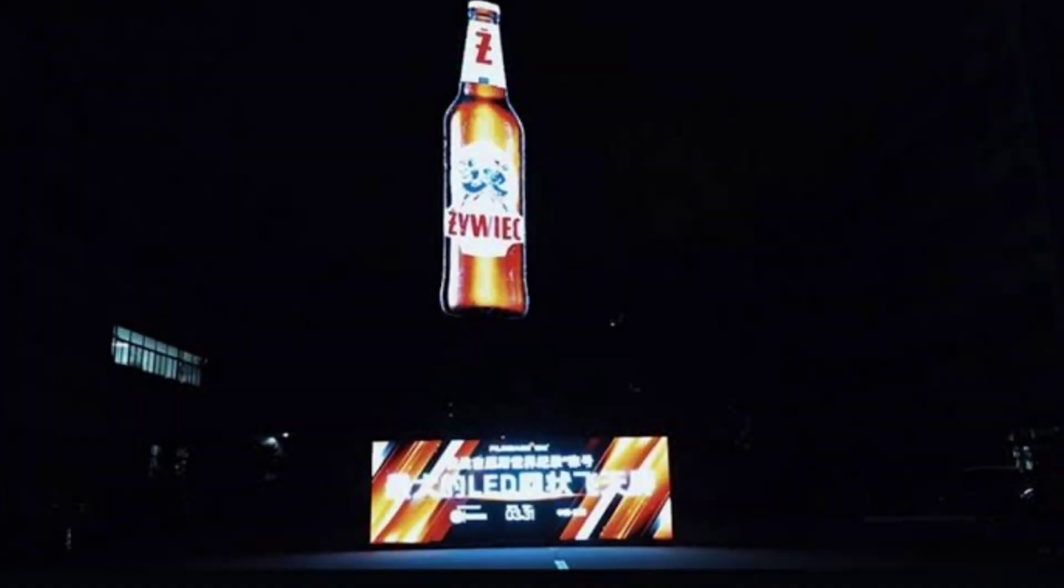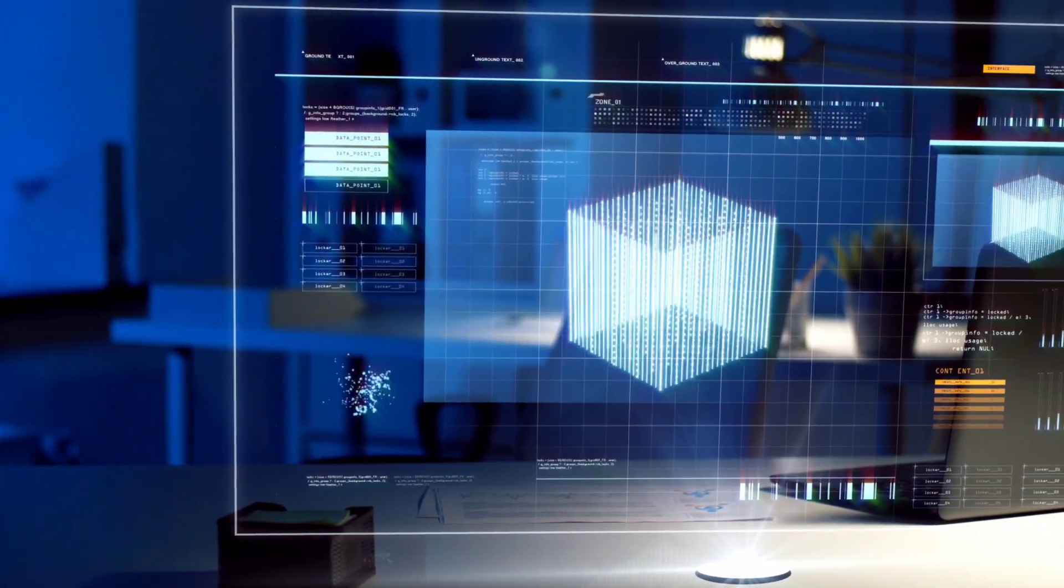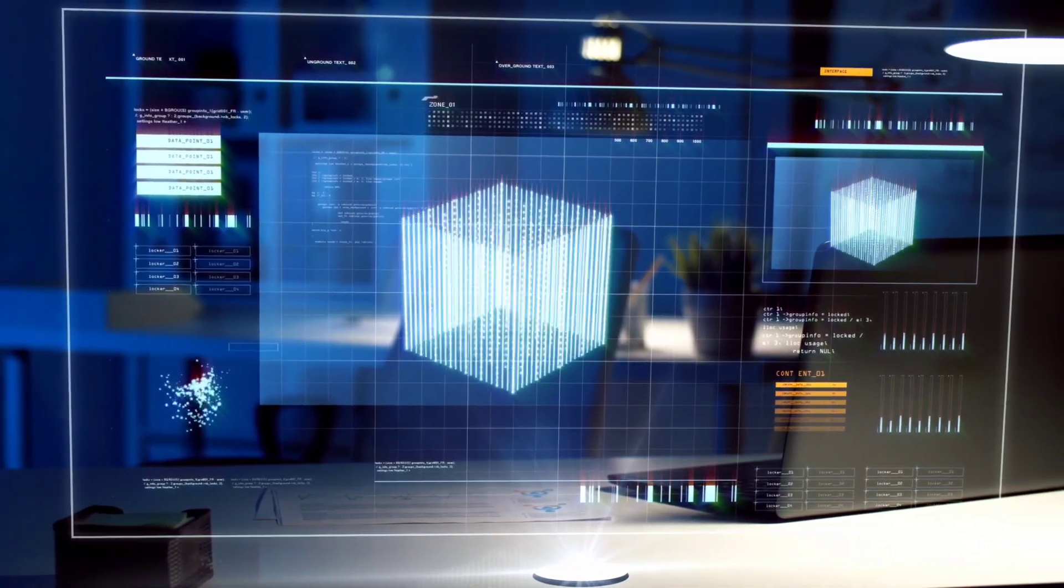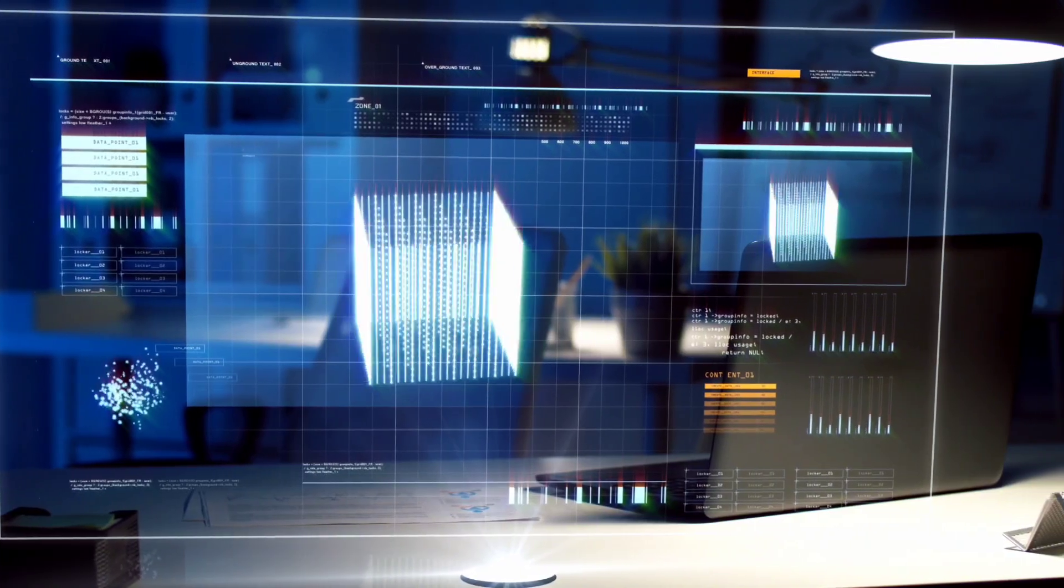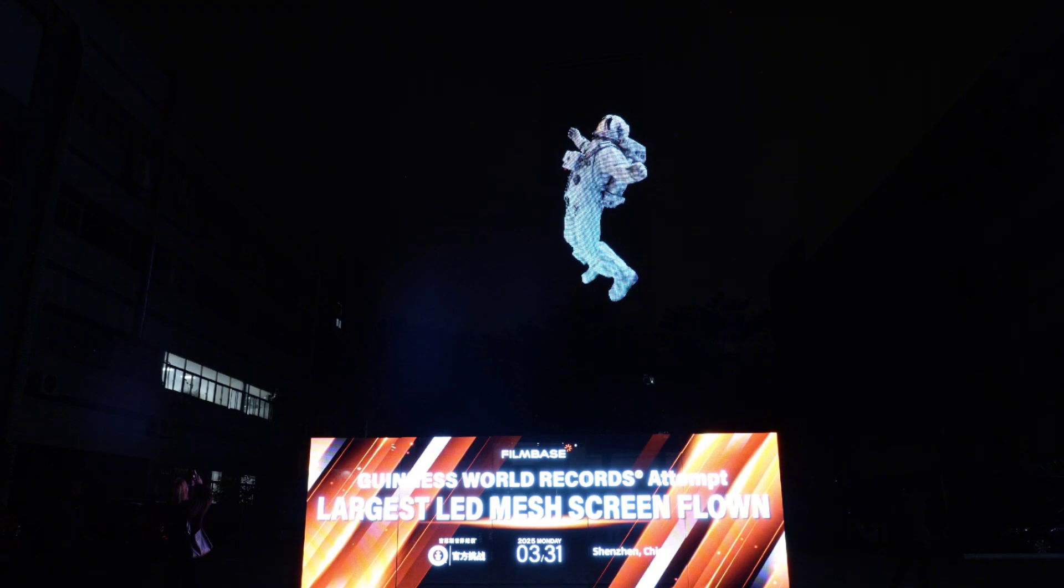On March 31, 2025, China shattered a world record with the largest flying LED mesh screen ever created, spanning an incredible 72.66 square meters and boasting 300,000 pixels. This groundbreaking innovation was developed by Shenzhen Filmbase New Materials.